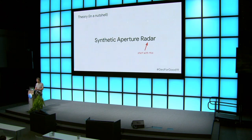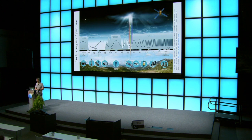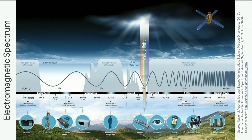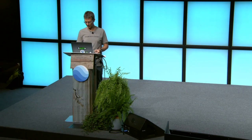Starting with theory: radar is generally a portion of the electromagnetic spectrum that energy is transmitted in. It fits in wavelengths on the order of centimeters — in the radio frequency, or radio wave section of the electromagnetic spectrum — the same range where cell phones operate. Most things are measured in centimeters in terms of the waves we'll be working with in radar.